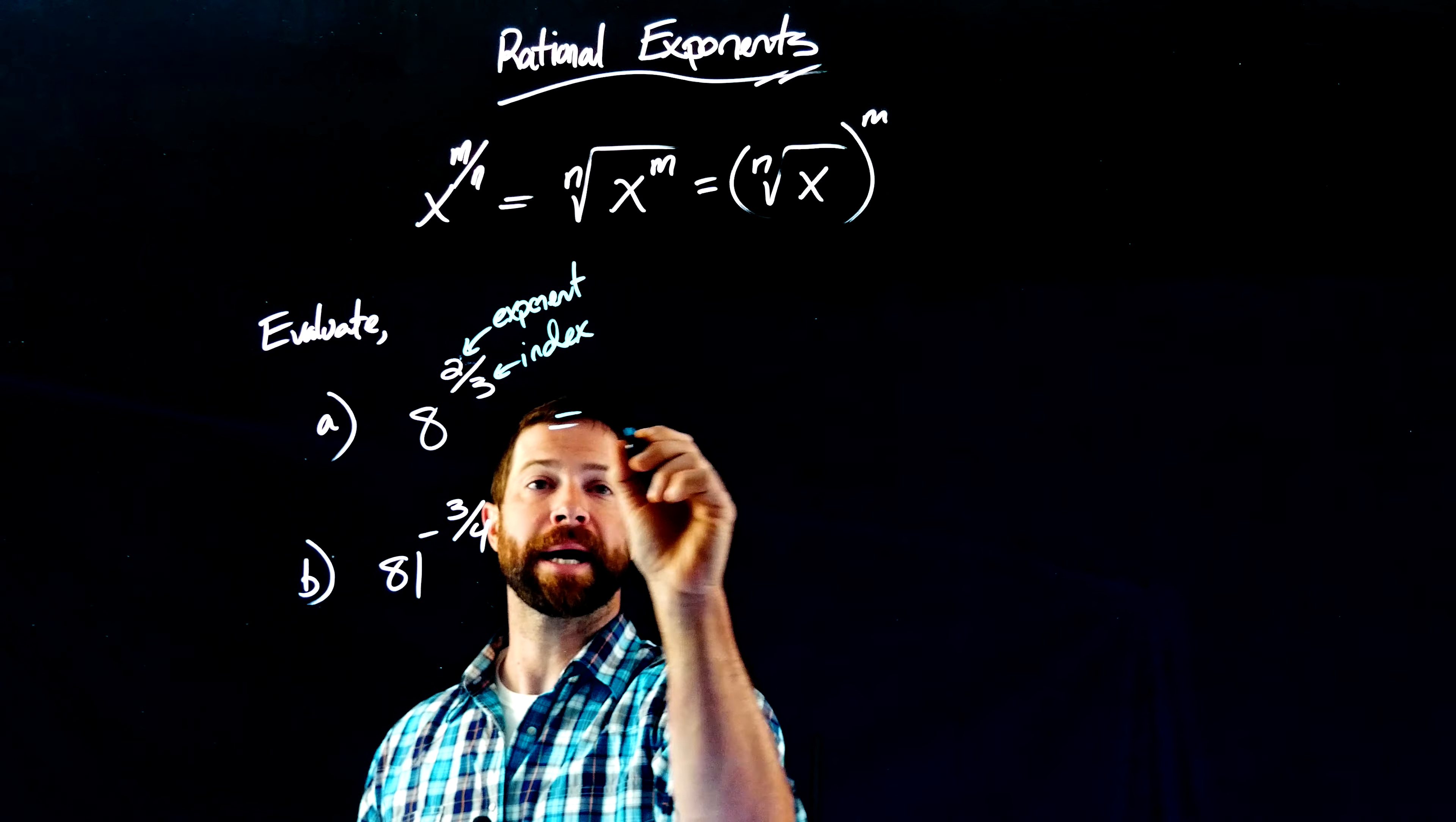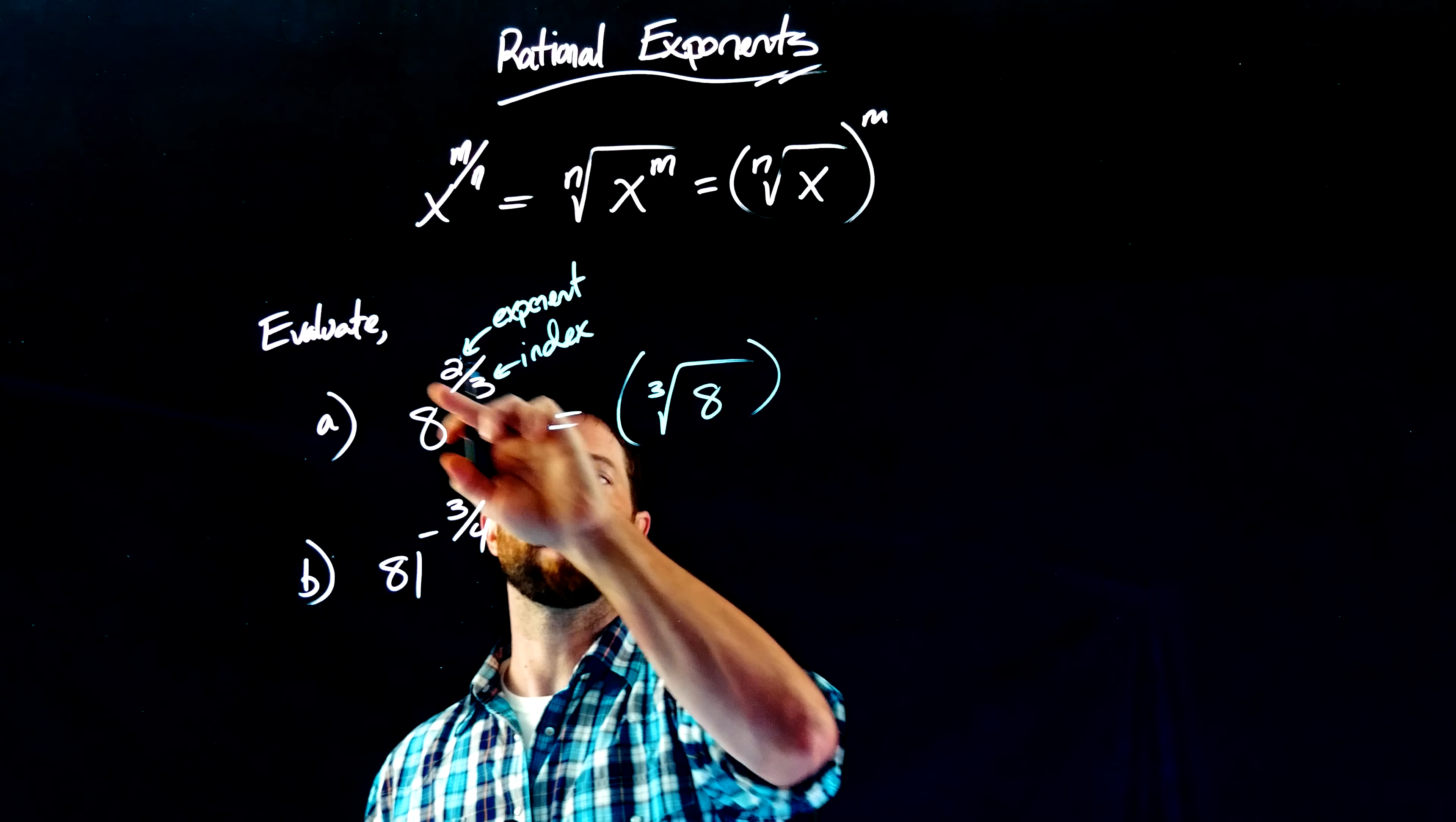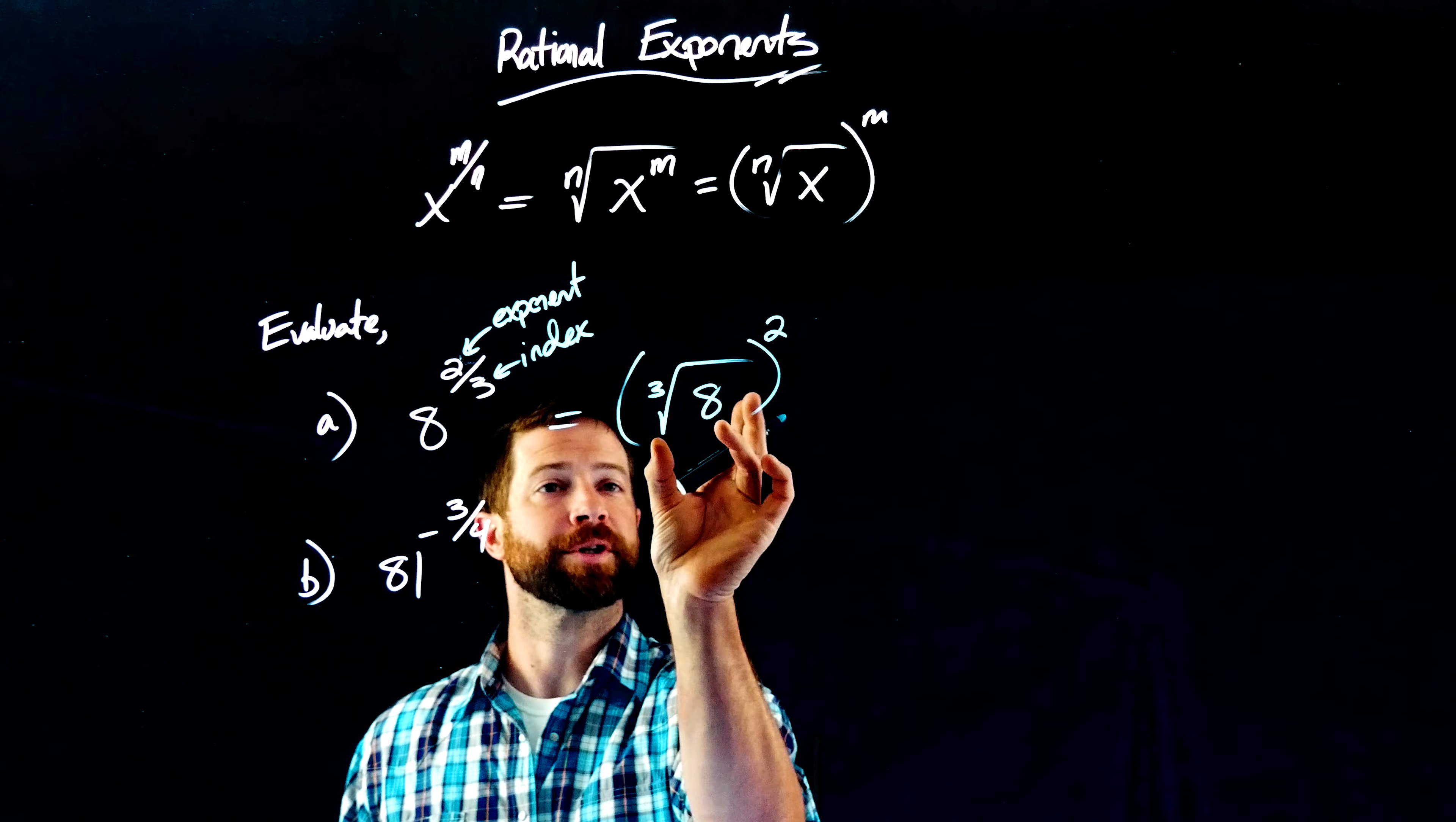I'll do that now. So this is going to be a radical or a cube root of index 3. And then the 2 up here will be the exponent.